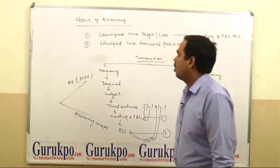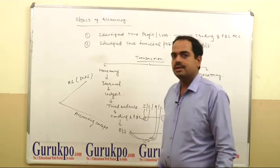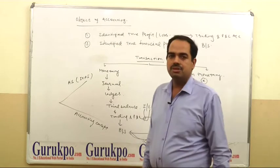First of all, the object of accounting is first to identify true profit or losses and second object of accounting is to identify true financial position.